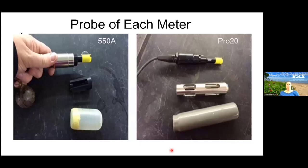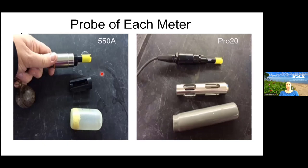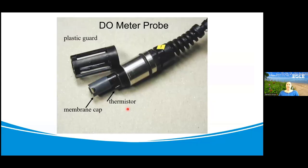Here is what the probe looks like when we take the cover off — there's a cage that protects the membrane, and the membrane itself goes over the oxygen probe in the middle. We don't want you to touch the yellow portion that encloses the membrane because it can be damaged very easily — it's very fragile. The little silver part visible on the probe is the thermistor, which measures the temperature.